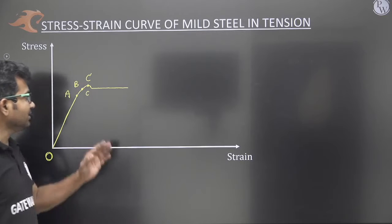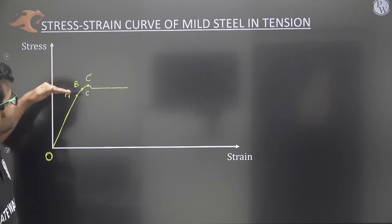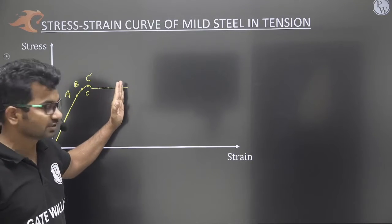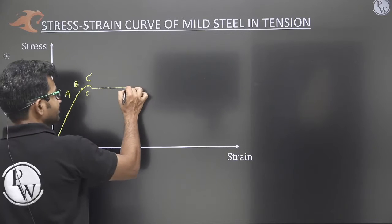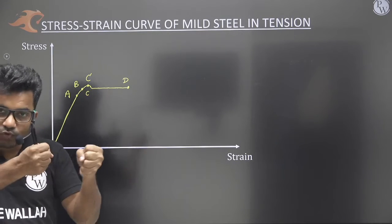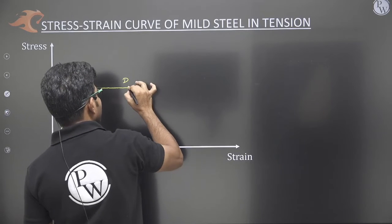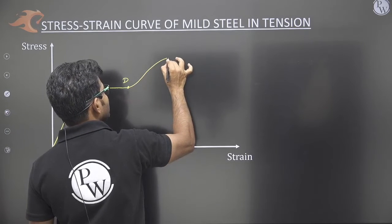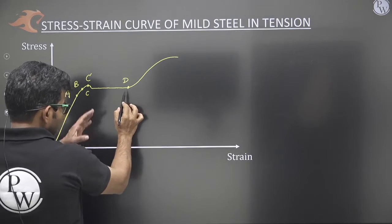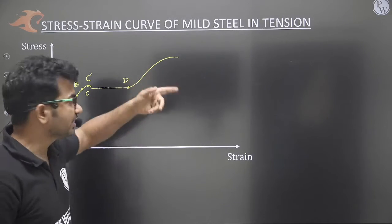This horizontal line represents that strain increases at a constant stress — we do not need to increase the stress further. This continues up to point D. After D, if we want to further elongate the material, additional force must be applied. So additional stresses are required and the material becomes harder again. This region is called the strain hardening region, where the material shows increased resistance and strength.